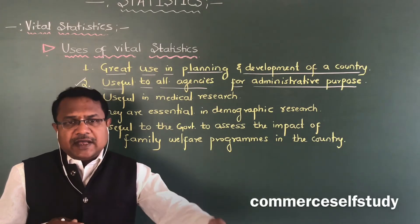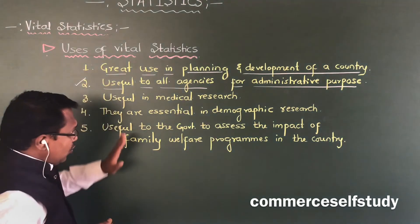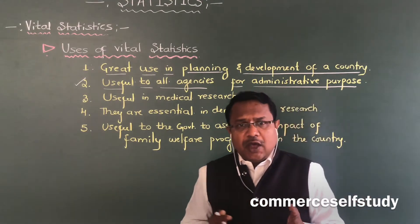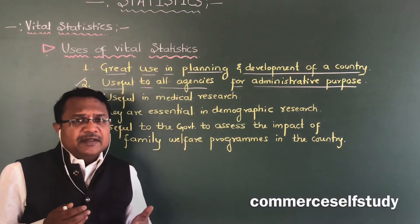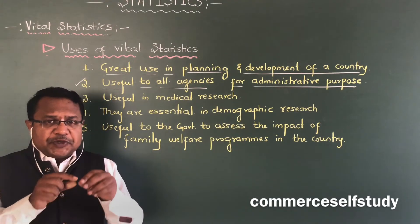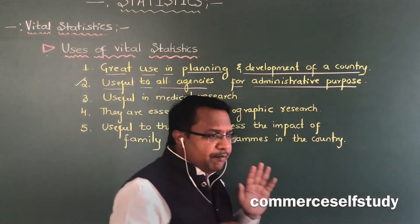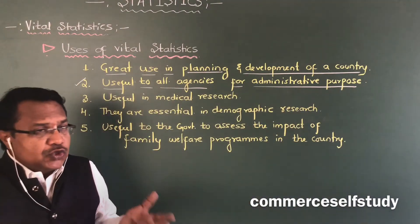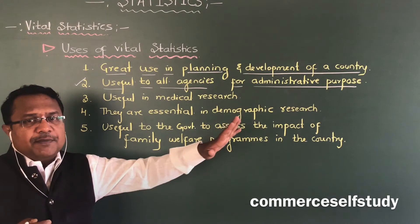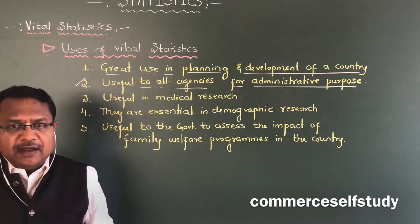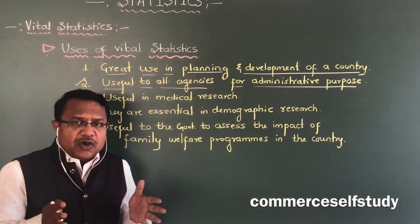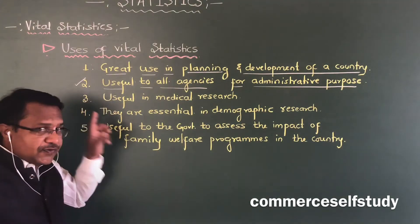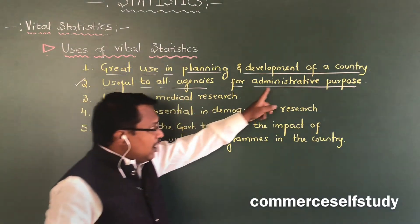Based on that data, the home department will come out with plans on how to provide good service to citizens. Similarly, the health department will also plan properly. Based on the diseases, the government will come out with specialized hospitals, like cancer hospitals, looking at the number of patients admitted. Because of COVID-19, so many patients were getting into hospitals, and they came out with specialized hospitals to take care of only such patients. So vital statistics is useful to all agencies for administrative purposes.